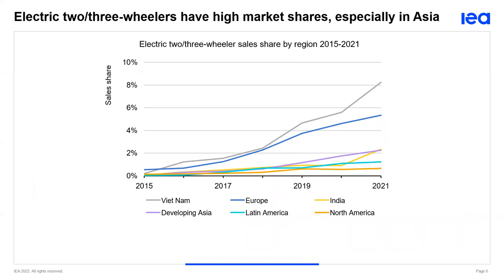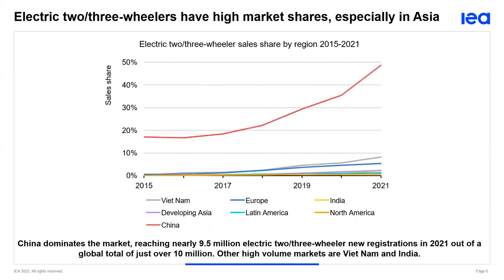We aren't just interested in electric cars — we're interested in how EV adoption is progressing across different road modes. Electric two- and three-wheelers are gaining popularity in some countries even where electric cars aren't making big inroads, such as Vietnam and other Southeast Asian countries. China is still dominating the electric two- and three-wheeler market, reaching almost a 50% electric sales share. In many emerging economies, electric two- and three-wheelers are already cheaper than their combustion counterparts, meaning there's less of a barrier to ownership than for cars.